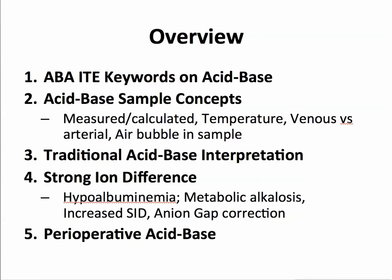An overview of what we'll talk about today: first, the in-training exam American Board of Anesthesia keywords related to the topic. We will look at acid-base sample concepts including what's measured versus what's calculated, the effect of temperature on arterial blood gas values, how to tell the difference between a venous versus arterial specimen, and what an air bubble in our arterial blood gas sample does to it.